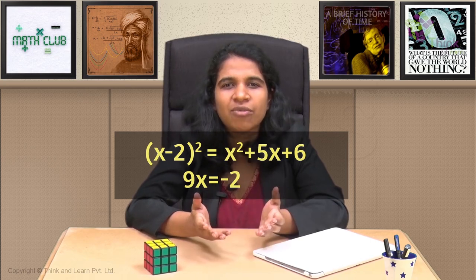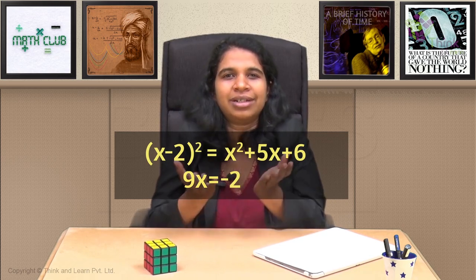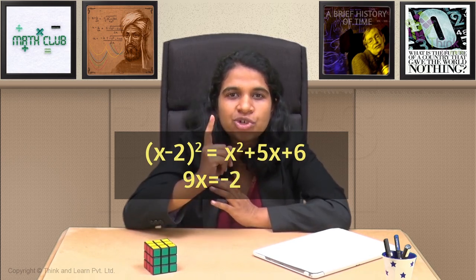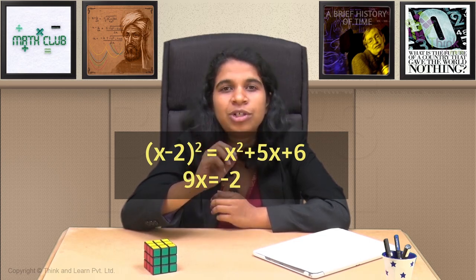The same equation cannot have two different degrees, right? In the original form, if you say degree is 2 and then in the new form, the degree is 1. Cannot work that way, right? One equation should have one degree. So the key is degree is always found in the simplest form.